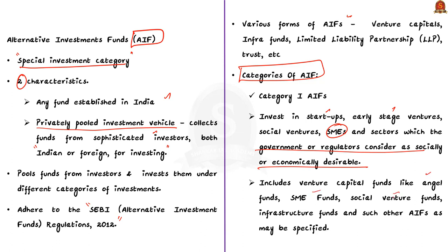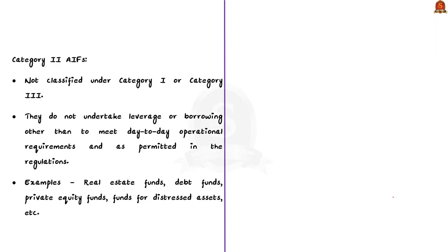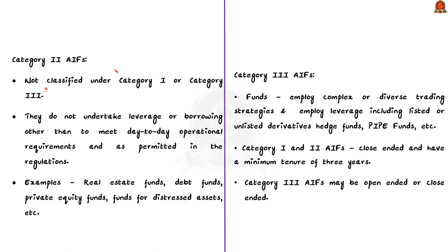Category 2 Alternative Investment Funds are funds which are not classified either under category 1 or category 3. They do not undertake leverage or borrowing other than to meet day-to-day operational requirements as permitted in the regulations. The various types of funds include real estate funds, debt funds, private equity funds, funds for distressed assets, etc.